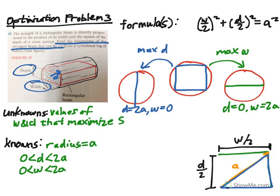At each of these extremes, the volume — or rather the strength — is zero. If you construct something with width 0 or depth 0, at the limit of our endpoints, the strength is equal to zero. Testing the endpoints is an integral part of using the Extreme Value Theorem.